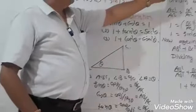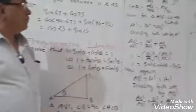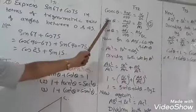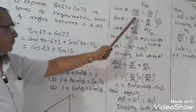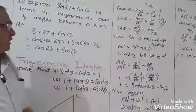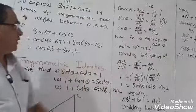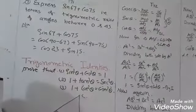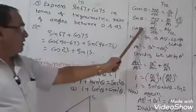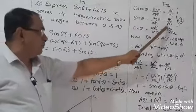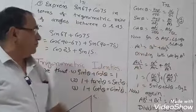Cosec θ is equal to hypotenuse upon opposite, that is AC upon BC. Sec θ is equal to hypotenuse upon adjacent, that is AC upon AB. Cot θ is equal to adjacent upon opposite, that is AB upon BC.